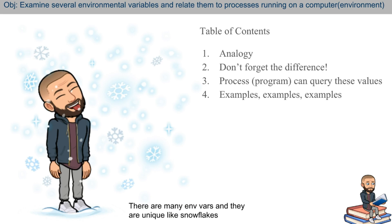So here's what we'll do. I'll first start with an analogy. Then I'm going to try to hammer down the differences between this programming concept of variables and system variables. And then we're going to talk about how processes can query these values so that that program can do the thing that you're trying to get it to do. And to finish, we'll just go over several examples on both Windows and Linux.